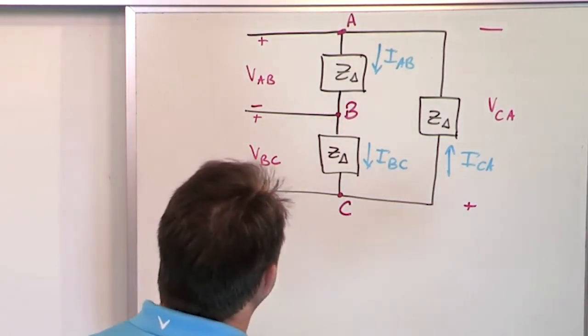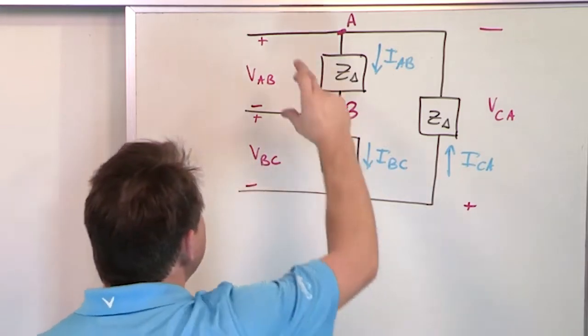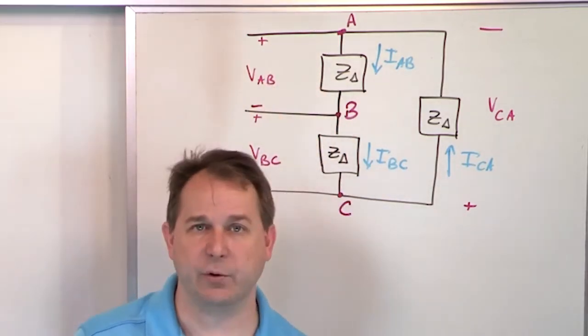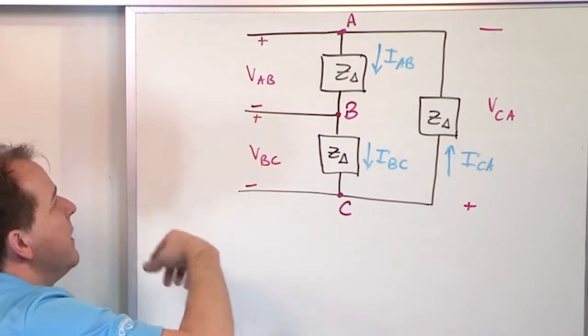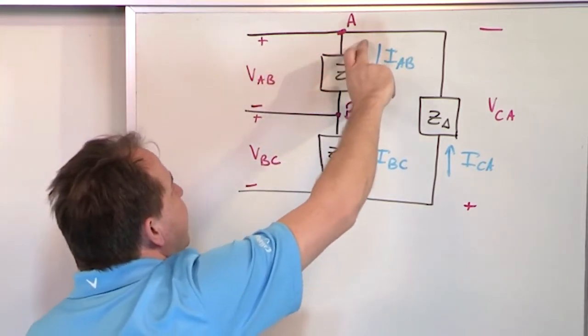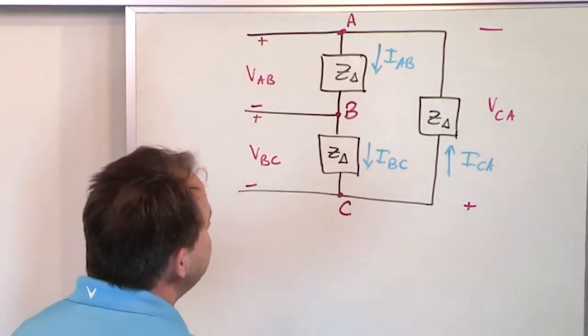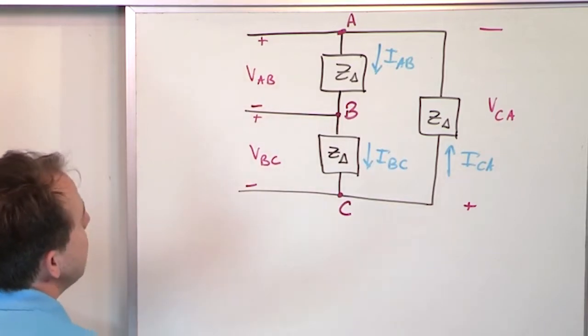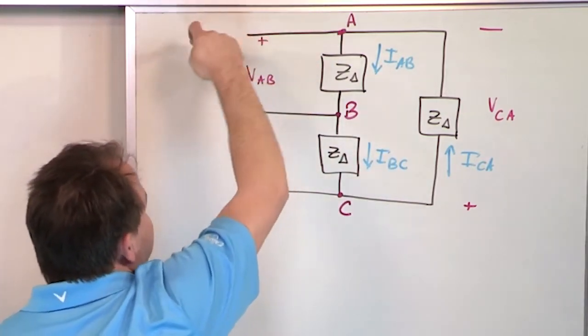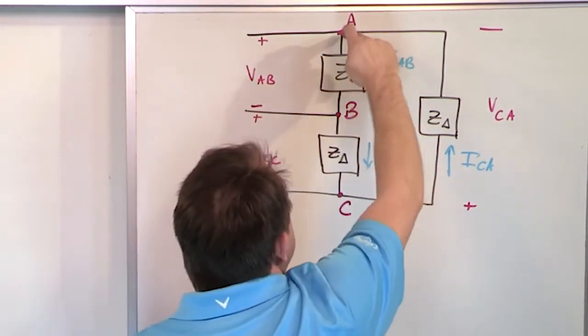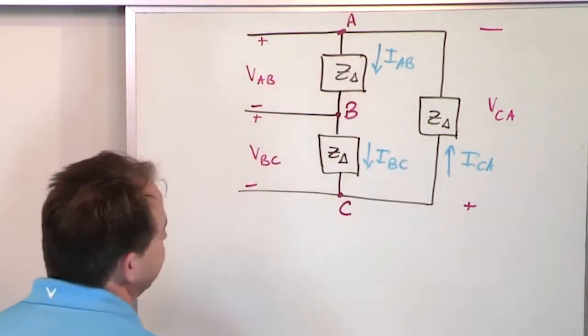Now notice the way I've got it drawn here is VAB, which is typically a line-to-line voltage, because these are the three lines coming out. The line voltage is equal to the phase voltage for a delta load. You know that already, we've done that many times. But the line current, which I haven't drawn coming in here, is different than the phase current going through this load because it branches and splits here.